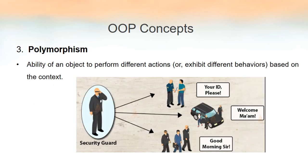The third important object oriented programming concept is polymorphism. You might have heard the term polygon in mathematics — poly means many and gon means sides, so polygon means a structure with multiple sides. Similarly, polymorphism means many faces. A single item will have different faces, as shown in the picture of a security guard who performs different operations based on the situation.